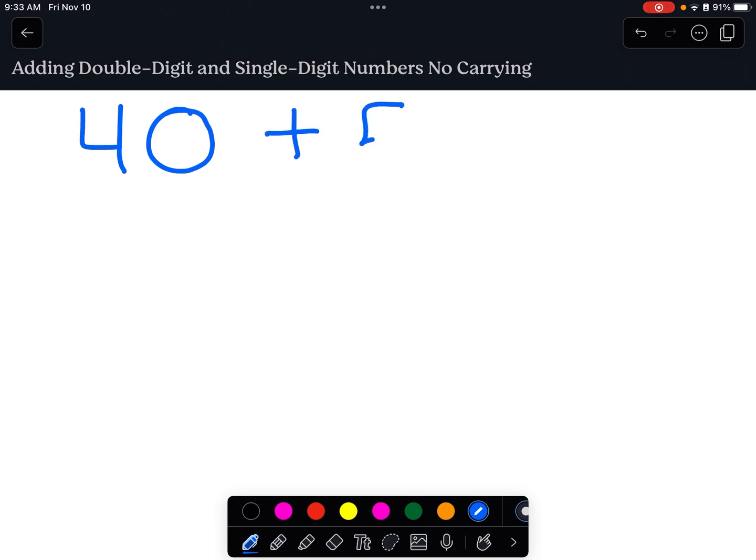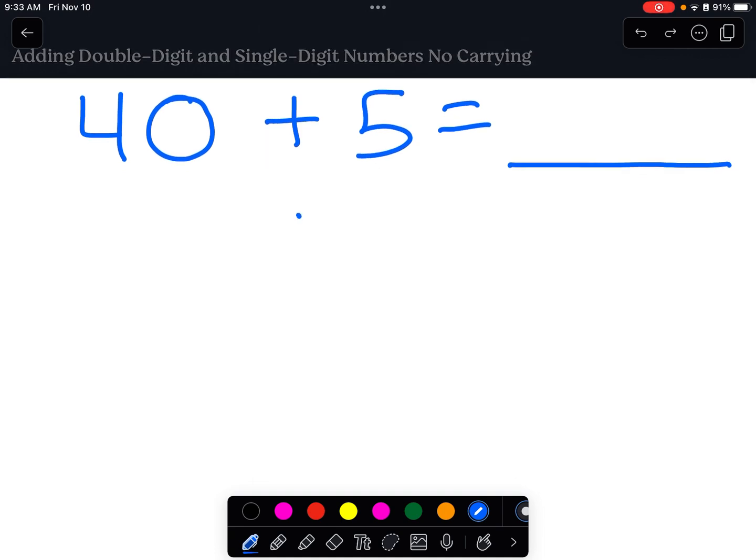Let's do 40 plus 5 equals... question mark, right? Well, the way that I'm going to teach you to do this is doing it vertically or in columns. 40 plus 5.